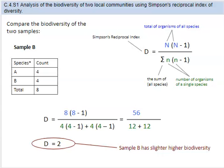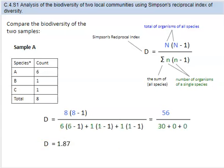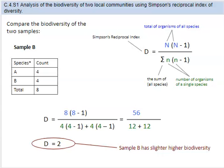Sample B has a slightly higher biodiversity index than Sample A. Sample A was 1.87. Sample B is about 2. What does this tell us? So Sample B, in this case, though it has less of a species count, it actually has less diversity—less richness I should say. Having more of an evenness is actually going to give it a slightly higher biodiversity according to Simpson's reciprocal index.